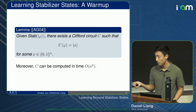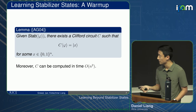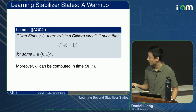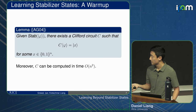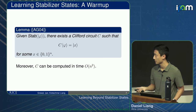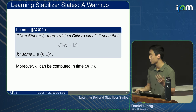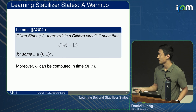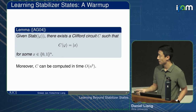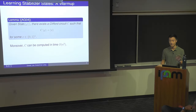Let me give a warm-up algorithm for learning stabilizer states, a version given by Ashley Montanaro around 2017. Given stab(ψ), there exists a Clifford circuit C such that applying C to the stabilizer state leaves a computational basis state. So if stab(ψ) is given, I measure that computational basis state x, and my classical description is C⁻¹|x⟩. It's reversible. That's the baseline — if you don't get this, you'll get lost later.